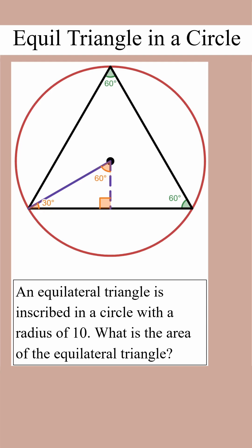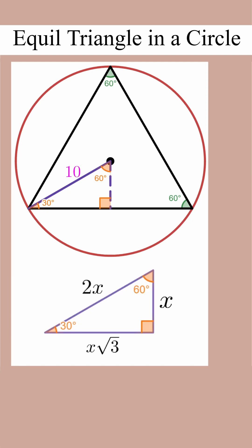Next, we'll add the radius to the picture, which is 10. And next, we'll hold it up to the 30-60-90 triangle from the reference sheet. I see that 2x is 10, that means x is equal to 5. So the side on the right is 5, and the side on the bottom is 5 root 3.